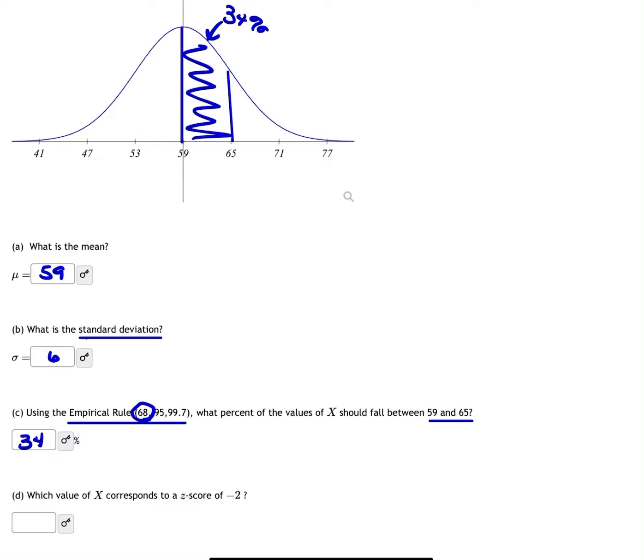If it was from 59 to 71, then that would be half of the 95%. There are a bunch of different questions you could ask just using the empirical rule.